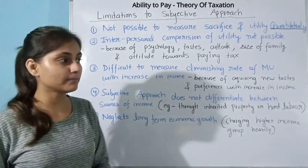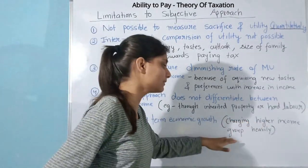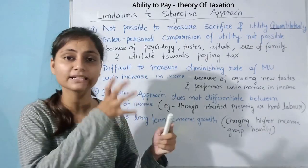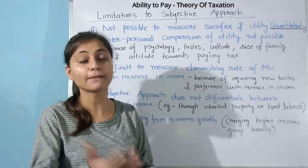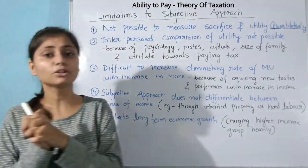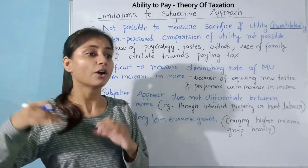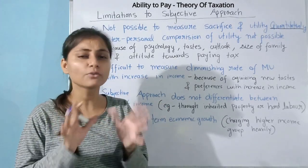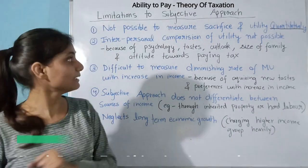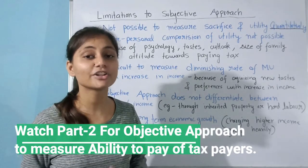The fifth limitation is that the subjective approach neglects long-term economic growth. The conclusion has always been to tax the higher income group heavily, but real investors in the economy are the rich — they invest large amounts that drive production and growth. By heavily taxing them, we are ignoring long-term economic growth. Some adjustments should be considered rather than blindly taxing the wealthy. Now we will discuss the objective approach to measuring ability to pay.